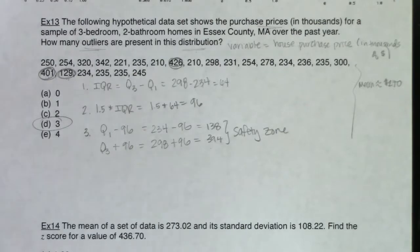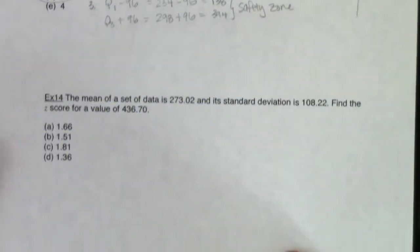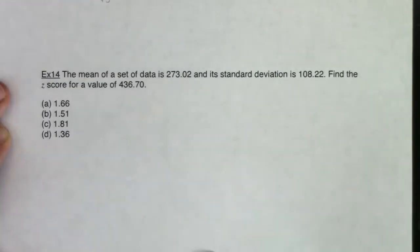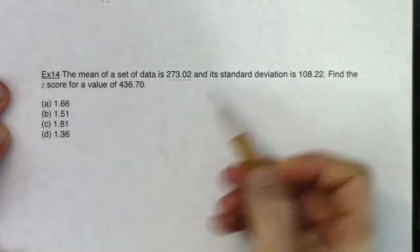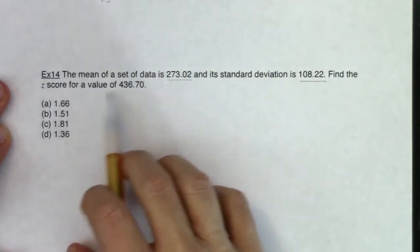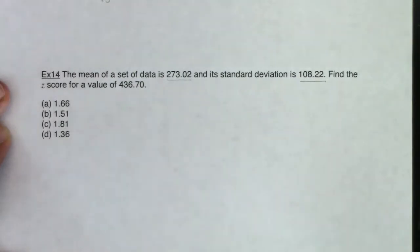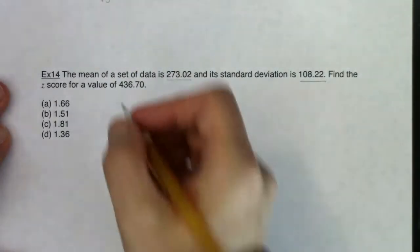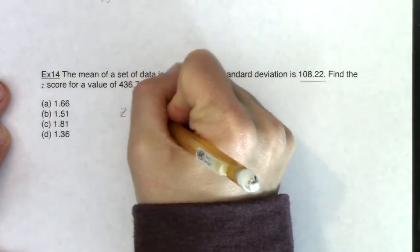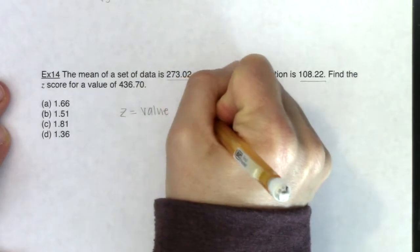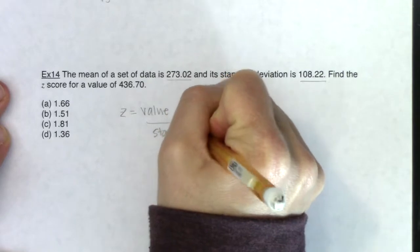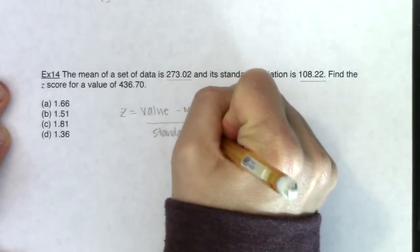All right, last but not least, at least multiple choice wise, let's go see if we can calculate a z-score. So it says the mean of a data set is 273.02 and its standard deviation is 108.22. Find the z-score for a value of 436.70. So no context to this data, which is fine. We're talking about z-scores. There is a formula for z-scores. It is value minus mean over standard deviation.